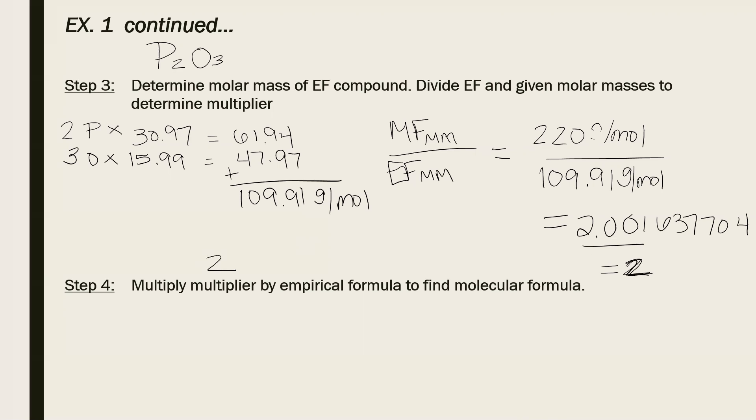So I put that out front. Two times my empirical formula P2O3. So I now get my molecular formula is P4O6.